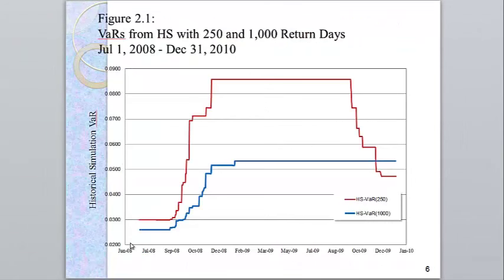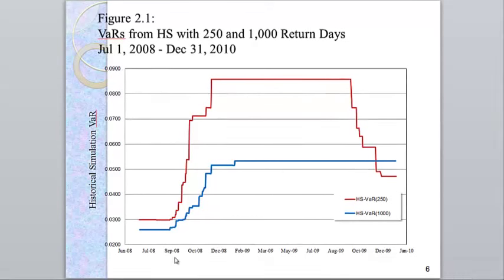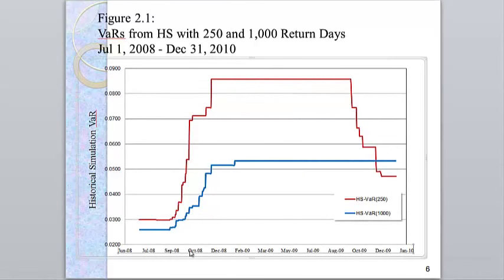In this graph, we see the comparison of value at risk computed with 250 days versus 1,000 days. The 1,000 day reacts much slower to changes in the market than the 250 day. This is for the crisis in 2008, where the 250 day reacts much more quickly.